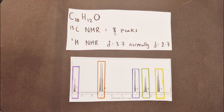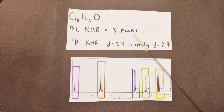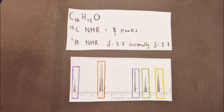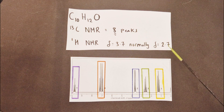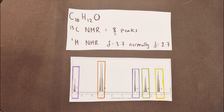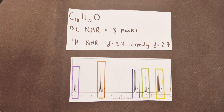Its peak for HNMR at 3.7 parts per million should normally be found at 2.7 parts per million. We'll factor that into our working as we go through this bit by bit.